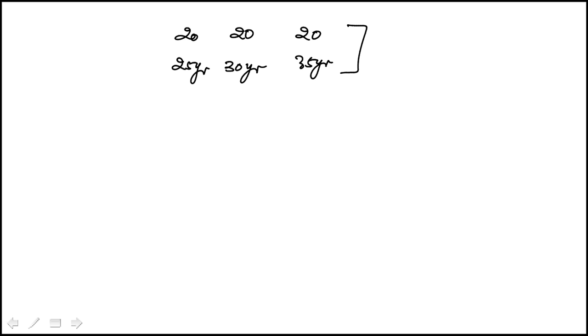Now the key thing to recognize immediately here is that the average, the weighted average here, is 30 years. The reason for that is we have equal numbers of all three, and they're both the same distance away from the average.